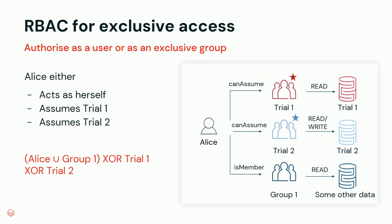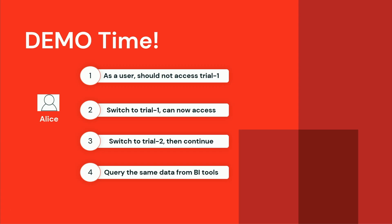So how would we model the scenario we had before? Trial one and trial two would be modeled as exclusive groups. Alice may be a member of some other groups like group one. Alice can either authorize as herself — getting her own permissions and those of group one — or she assumes trial one, authorizing as that group and only having trial one permissions. Then she can assume trial two, and only gets trial two permissions. With that, we get very clean isolation of data access. This is a lot of theory — now Sid will show you how the product experience will actually look.